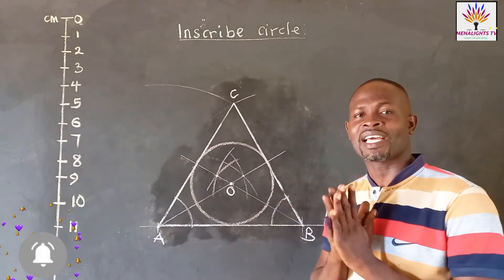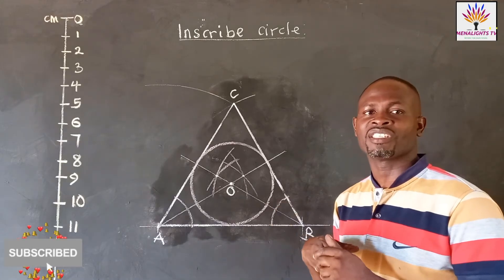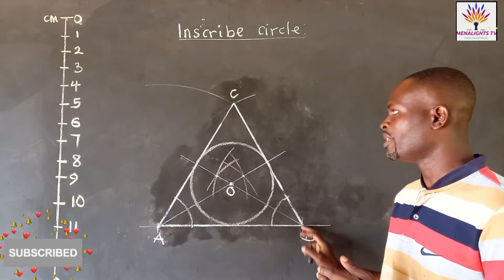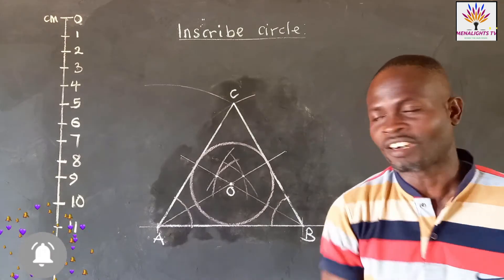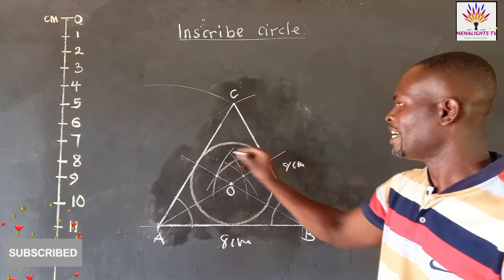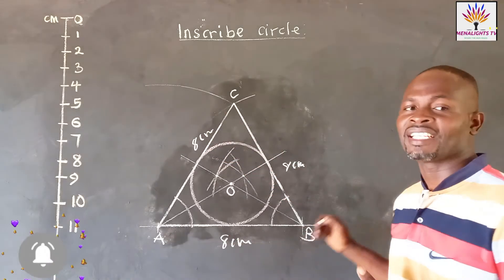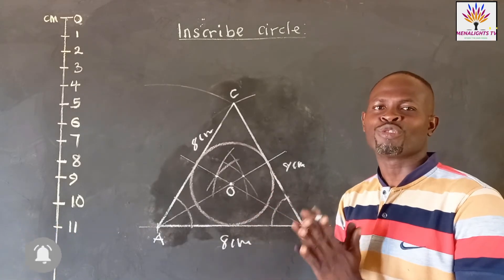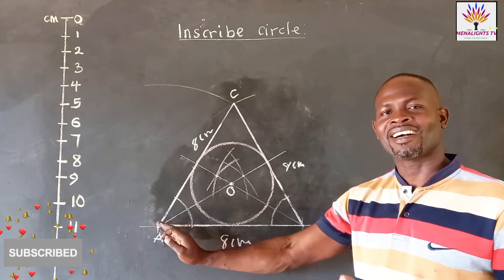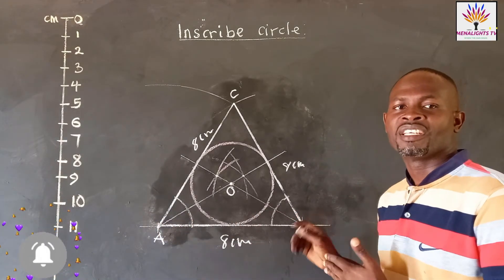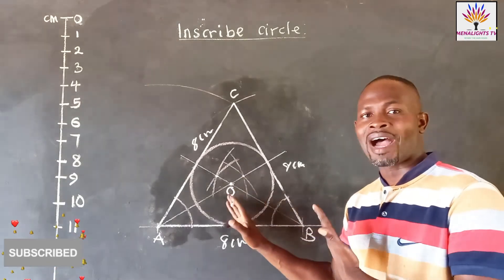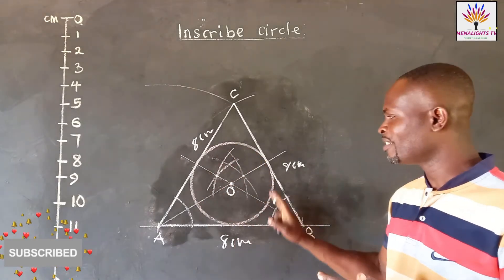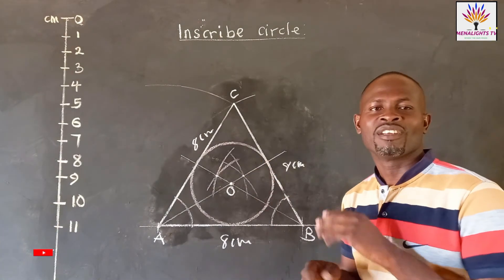Let's look at the steps again. The first step is to draw a triangle of any given dimension — most essentially an equilateral triangle. As you can see, we have triangle ABC, and they all have the dimension of 8 centimeters — from A to B is 8, B to C is 8, and A to C is 8. Then after drawing the triangle, you bisect any two angles. Here we bisected the angle at A and the angle at B, and located the point of intersection as O. With O as center, we took a suitable radius to draw a circle within the triangle, and it successfully touched the three sides of the triangle.